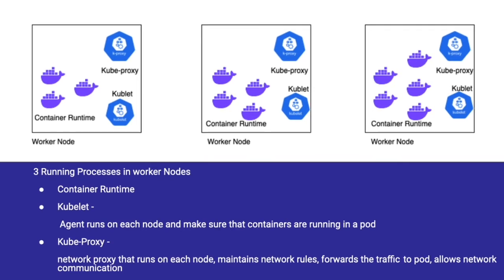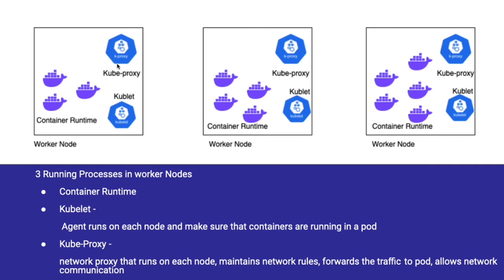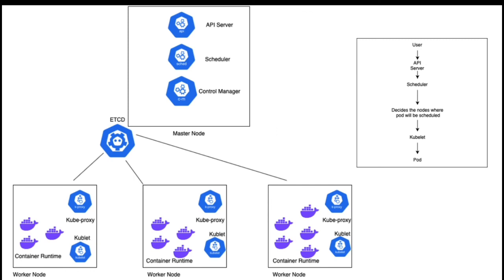The third worker node process is kube-proxy. Kube-proxy is mainly responsible for maintaining network rules and forwarding traffic to pods. It deals with network-related information — kube-proxy forwards the traffic from services to the pods. It maintains network rules and allows network communication, helping forward traffic from any kind of service to the pods.